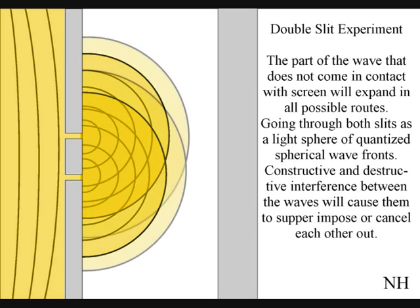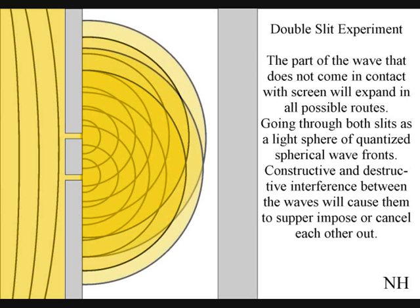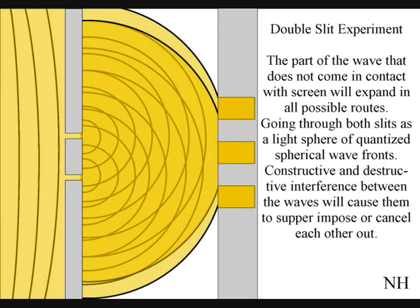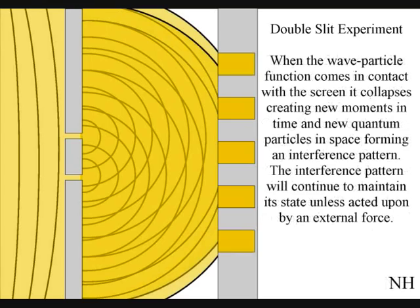Constructive and destructive interference between the waves will cause them to superimpose or cancel each other out. When this wave-particle function comes in contact with the screen, it will collapse, creating moments in time and quantum particles in space in the shape of an interference pattern.